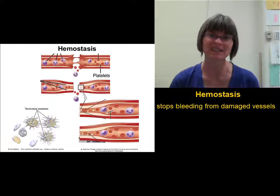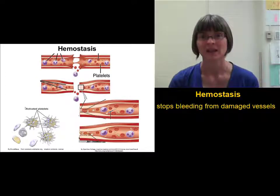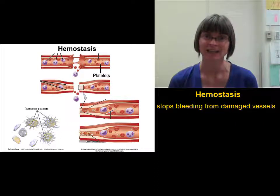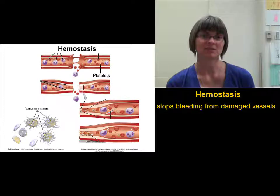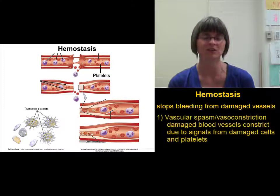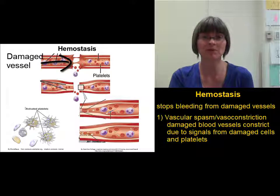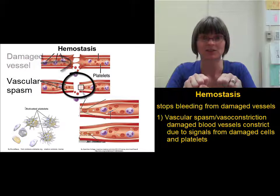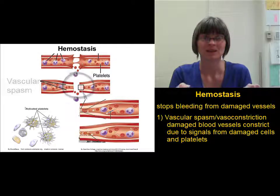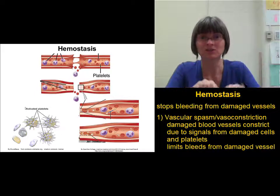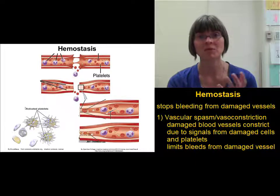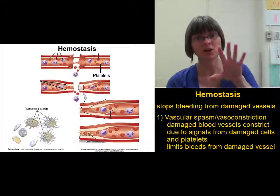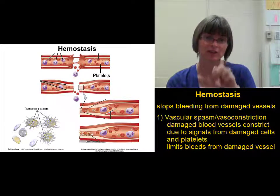Let's take a closer look at this process of hemostasis that the platelets are so involved in. This is clearly a very important process because if you are bleeding, you need to stop bleeding so that you don't die. There are three phases to hemostasis. The first part of hemostasis is called vasoconstriction or vascular spasm. In vasoconstriction, right after there's some sort of damage to the blood vessels, those blood vessels suddenly constrict. If you've damaged a blood vessel, you want to constrict it so that you reduce the amount of blood being lost. This vasoconstriction is triggered by the release of signals coming from the damaged cells themselves, and the platelets release serotonin that increases that vasoconstriction.